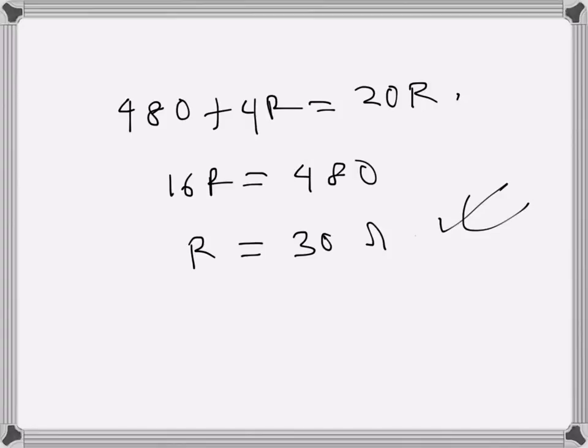So that is the value of R, and we need to find what is the power through that resistance when the current through 80 ohms is 4 amps. So the current through 30 ohms will be 20 minus 4, that is 16. So PR will be, we know power is I squared R, and the current...